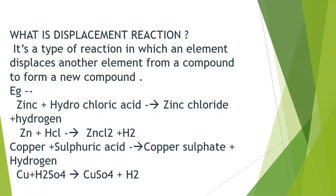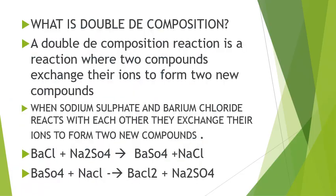One more example: copper plus sulfuric acid — Cu plus H₂SO₄. When copper reacts with sulfuric acid, it displaces hydrogen from sulfuric acid and occupies its place to form copper sulfate, and hydrogen is displaced. Cu plus H₂SO₄ gives CuSO₄ plus hydrogen. Such a reaction is known as a displacement reaction.